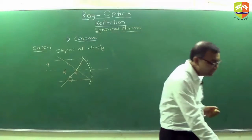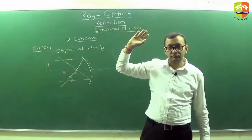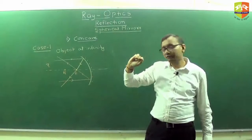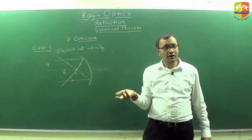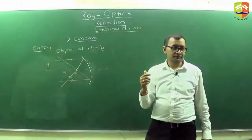Now, object is at infinity does not mean that object is like million kilometers away. For example, if the focal length is 10 centimeter and object is like 100 meters away, that is also infinity.